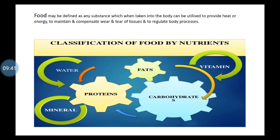Food is classified in a number of ways. The first classification is of food by nutrients. According to nutrients, food is classified as carbohydrates, fats, proteins, vitamins, minerals, and water. On your screen you will see this first type of classification.